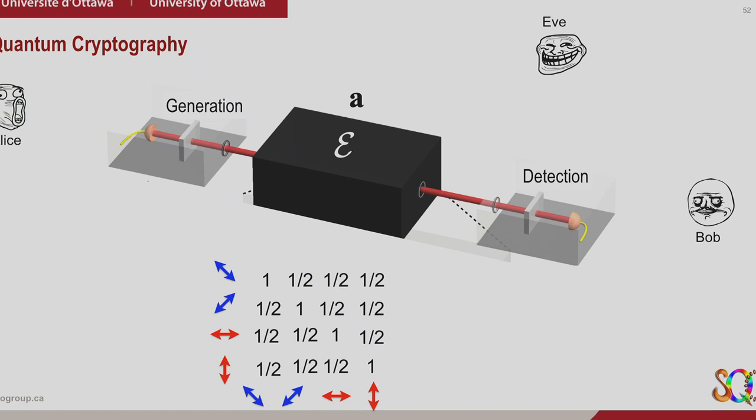We call it detection probability density. It's one on the diagonal term, and the rest will be one half. That's a property of being mutually unbiased spaces. In the D dimension, that will be one divided by D for the rest.